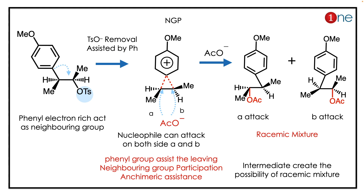Here OTs is the leaving group, so you might realize there is neighboring group participation because the phenyl group is electron-enriched. It acts as the neighboring group and assists the leaving of OTs. A three-membered cyclopropyl ring is formed. How the ring will open is interesting because there are two possibilities.